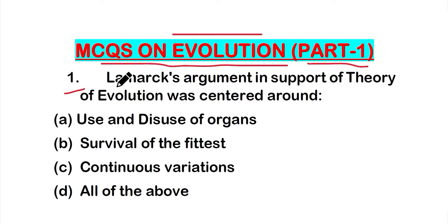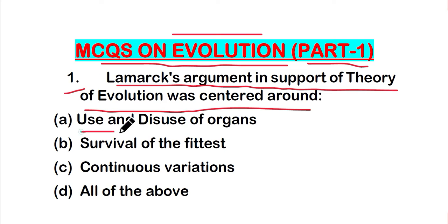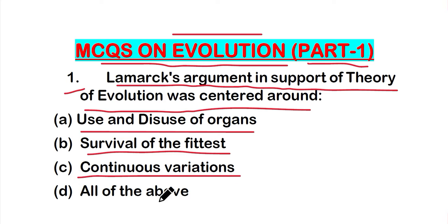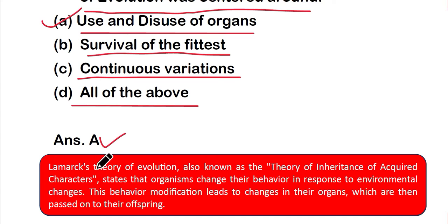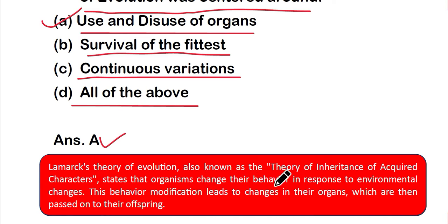The first question: Lamarck's argument in support of the theory of evolution was centered around — option A: use and disuse of organs, option B: survival of the fittest, option C: continuous variations, or option D: all of the above. The correct answer is option A — use and disuse of organs. Lamarck's theory, also known as the theory of inheritance of acquired characters, states that organisms change their behavior in response to environmental changes.